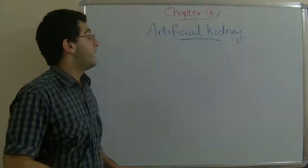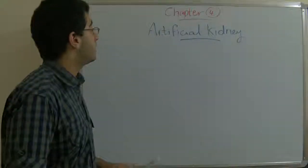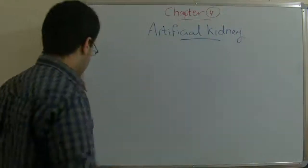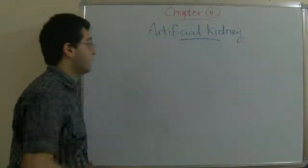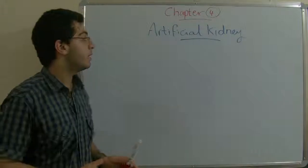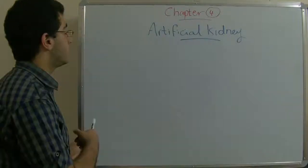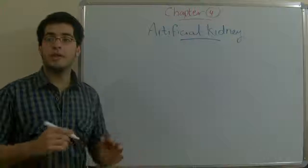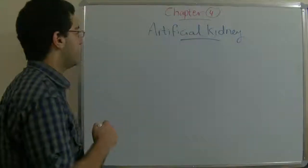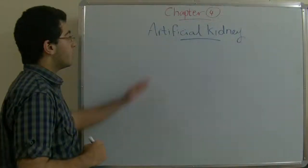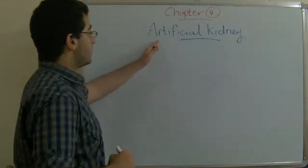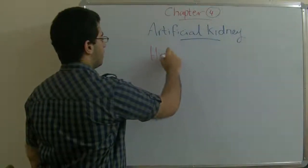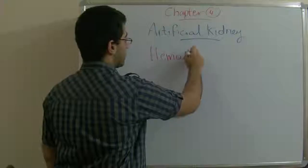Hello everybody and welcome back. Today I'll talk about the artificial kidney. The artificial kidney is a device which is connected to the human body in order to carry out the function of the kidney in case of kidney failure. This artificial kidney carries out a process which is called hemodialysis.